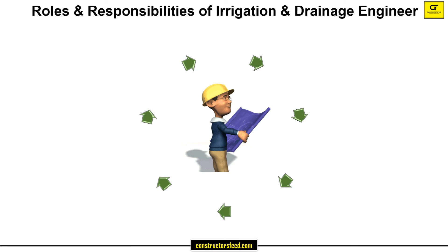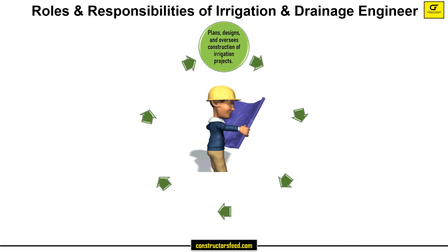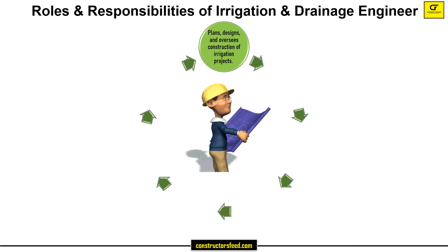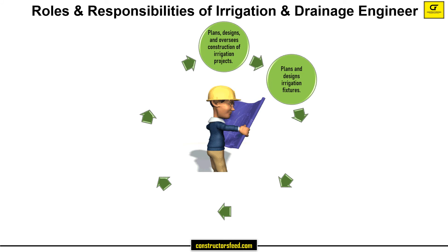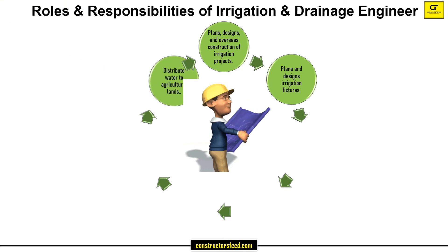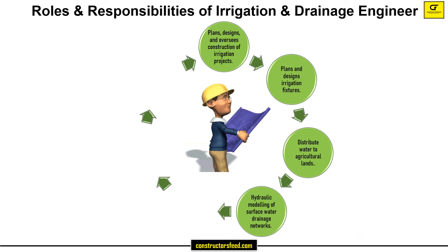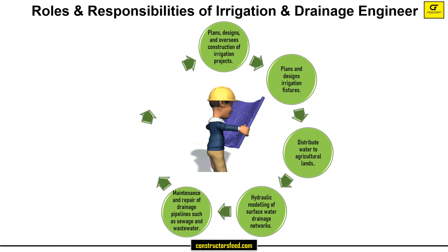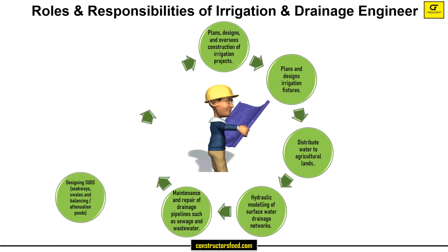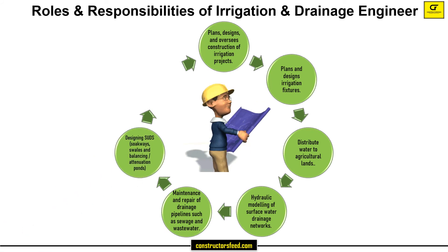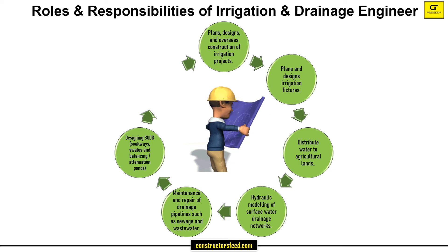Some of the roles and responsibilities of an irrigation and drainage engineer: plans, designs, and oversees construction of irrigation projects; plans and designs irrigation fixtures; distributes water to agricultural lands; hydraulic modeling of surface water drainage networks; and maintenance and repair of drainage pipelines such as sewage and wastewater, and designing SUDS, soakways, swales, and balancing or attenuation ponds.